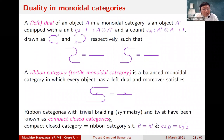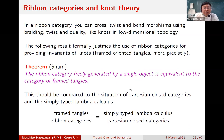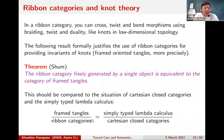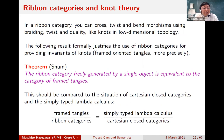The reason ribbon categories are important in topology: the ribbon category freely generated by a single object is equivalent to the category of framed tangles. So given any ribbon category, you automatically get a functor from this free category, giving invariants of tangles. This is quite analogous to lambda calculus: the simply-typed lambda calculus gives a free Cartesian closed category, so giving any Cartesian closed category automatically gives an interpretation of the calculus.